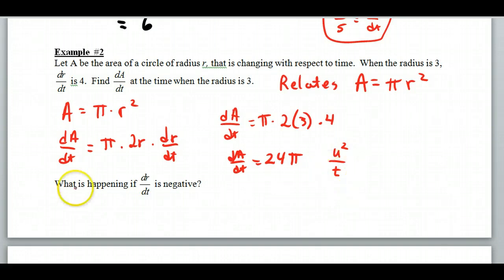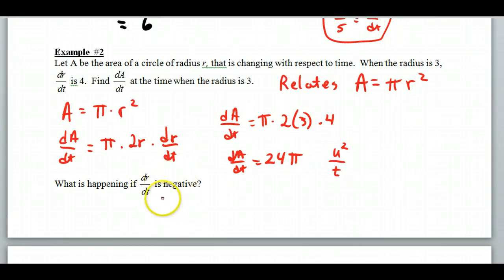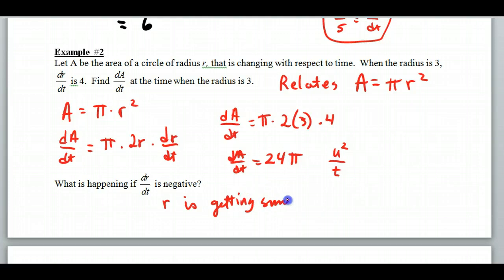Now here's a question: what happens if dr/dt is negative? What does that mean? Well, if dr/dt is negative that means the radius is changing at a negative rate — so the radius r is getting smaller.